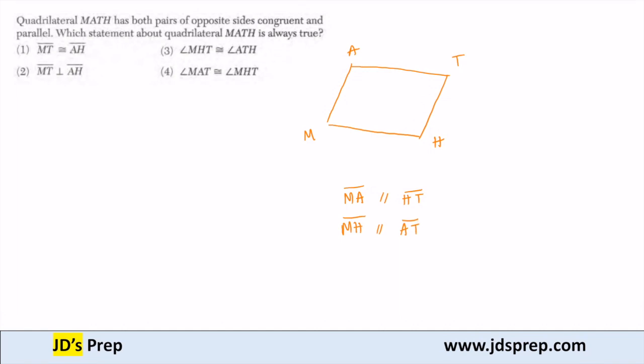The other piece of information that's given is opposite sides are congruent. So MA is congruent to HT, and AT is congruent to MH. That's the only given pieces of information. We want to know which other statement is always true.